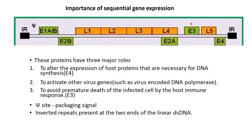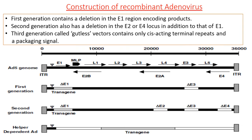Proteins produced by E4 and E3 have three major roles. Proteins from E4 alter expression of host proteins necessary for DNA synthesis and activate other viral genes such as the virus-encoded DNA polymerase. Proteins coded by E3 avoid premature death of the infected cell by the host immune response. The Psi site helps in packaging signal. The inverted repeat (IR) is present at both ends of the linear double-stranded DNA.